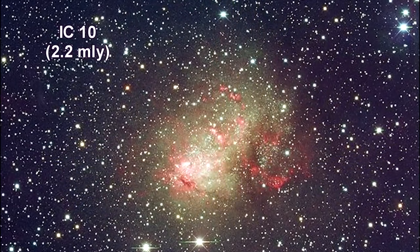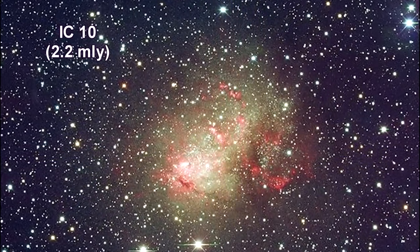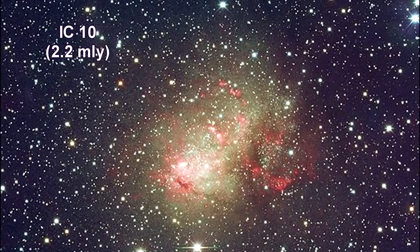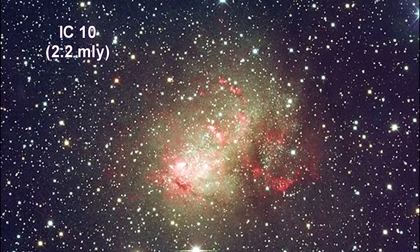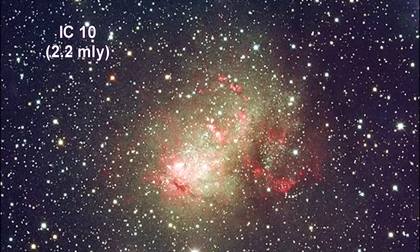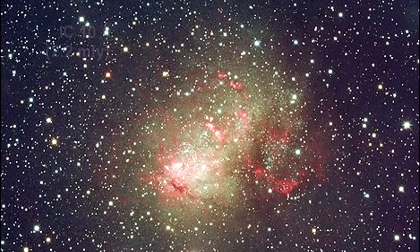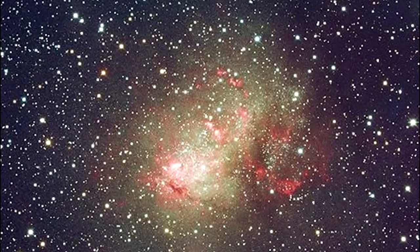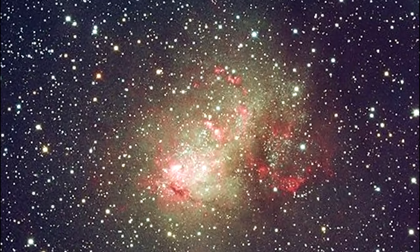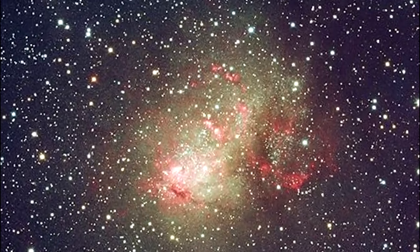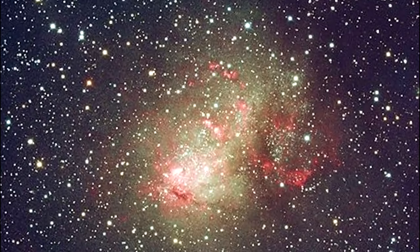IC-10 is another irregular galaxy. Edwin Hubble suspected it might belong to the local group of galaxies, but its status remained uncertain for decades. Its membership in the group was finally confirmed in 1996 by direct measurements of its distance based on observations of Cepheids.